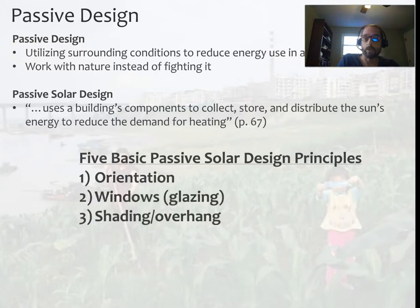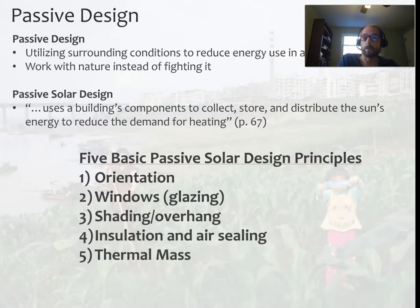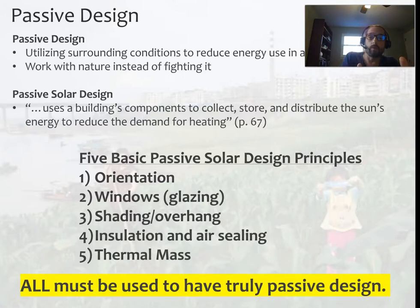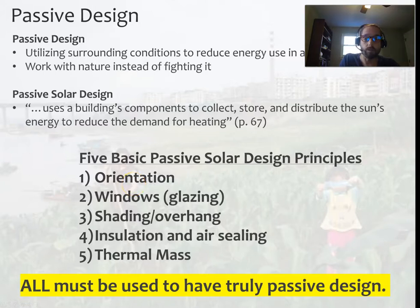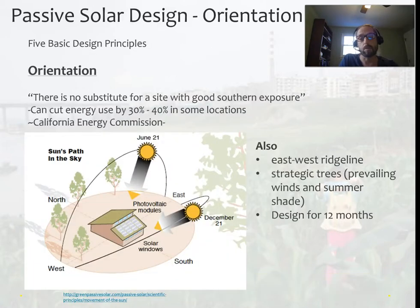The five passive solar design principles are: orientation, glazing, shading and overhang, insulation and air sealing, and thermal mass. This is really important — put this down in your notes. All of these must be used at the same time in order to have a truly passive design. You can pick and choose, and it will help — each of these individually does contribute to a reduction in energy use — but if you really want to maximize your design, you have to integrate all these principles together.